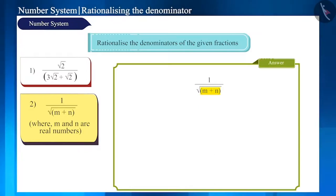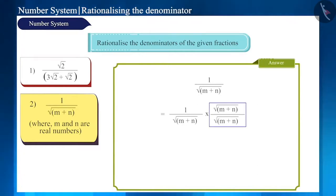Both these numbers are in the same square root. Therefore, we will multiply the numerator and denominator with square root of m plus n and we will get root m plus n by m plus n.